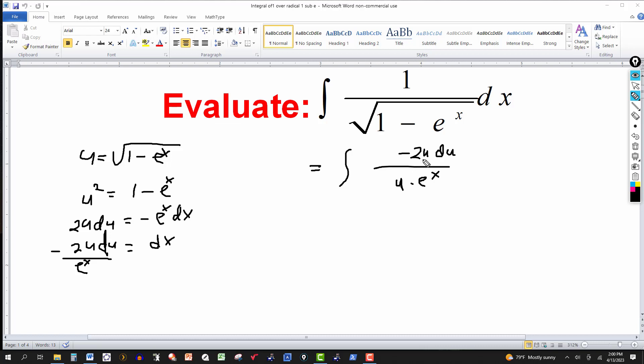And I'll have the e to the x in the bottom. Okay, not there yet. We still have an expression with an x. So let's do this. Minus 2u du. The numerator is okay. And then from this expression right here, I solve this for e to the x. I can get e to the x over, and making the u squared over, I get e to the x is equal to 1 minus u squared.